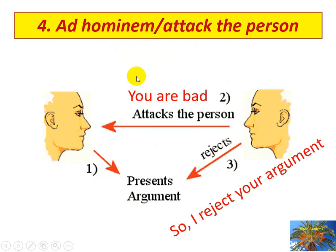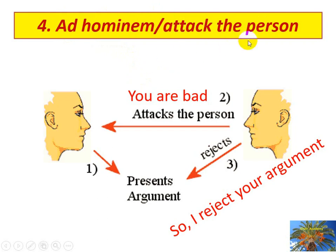The next fallacy is ad hominem, or 'attack the person.' The word 'ad' in Latin means 'to' or 'toward,' and 'hominem' means 'person' or 'human.' So ad hominem means 'toward the person' — implying an attack on the person rather than on the argument or evidence. For example: Person A presents an argument, but Person B on the right rejects and dismisses it.